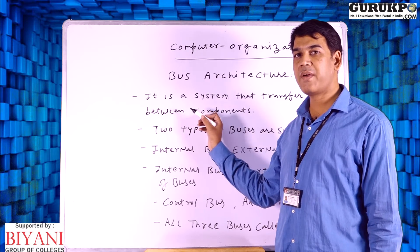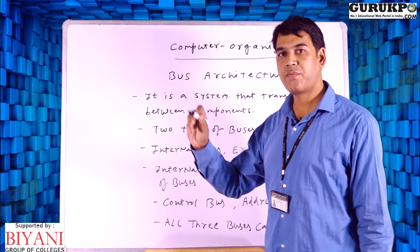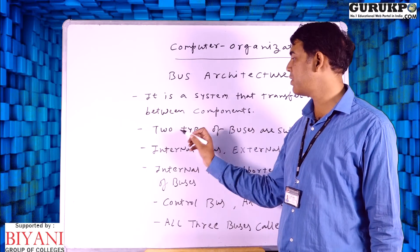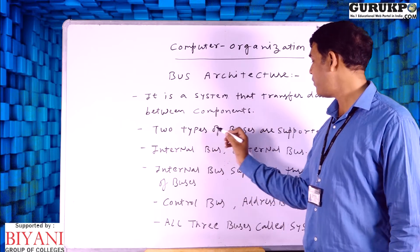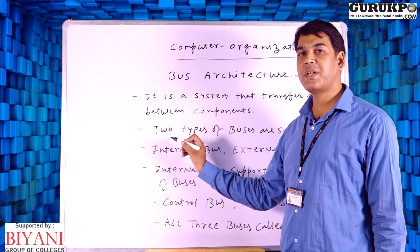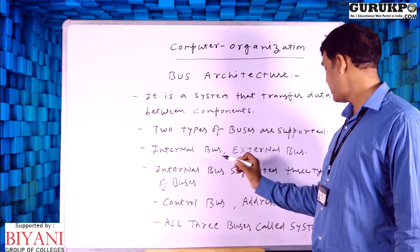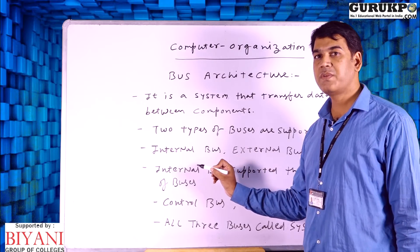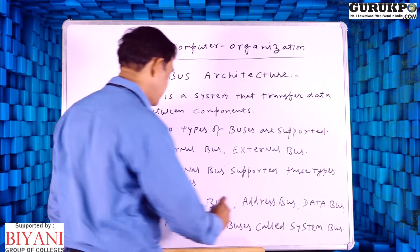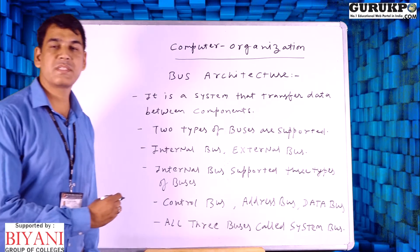In the motherboard we have a lot of components, and if we want to transfer data from one place to another, we proceed with bus architecture. Basically, two types of buses are supported: internal bus and external bus. The internal bus supports three types of buses: control bus, address bus, and data bus. All three types of buses are called the system bus.